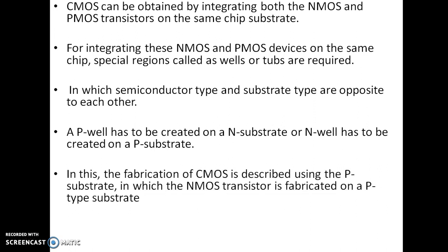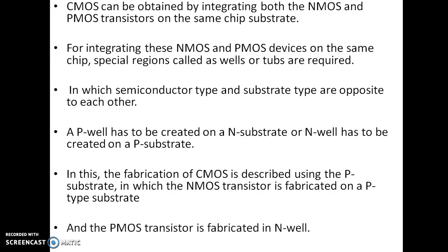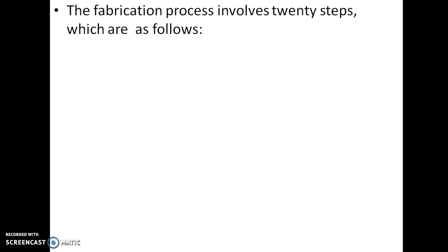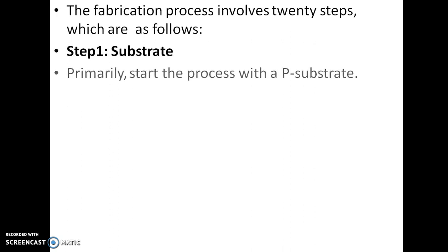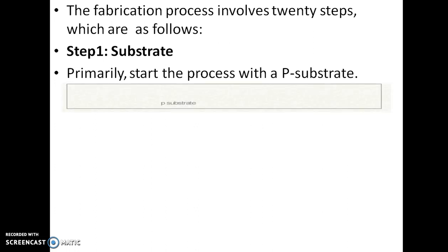In this fabrication of CMOS, a P-type substrate is used in which the NMOS transistor is fabricated on the P-type substrate and the PMOS transistor is fabricated in the N-well. The fabrication process involves approximately 20 steps. The first step is substrate — we take a P-type substrate, so the process starts with a P-type substrate.